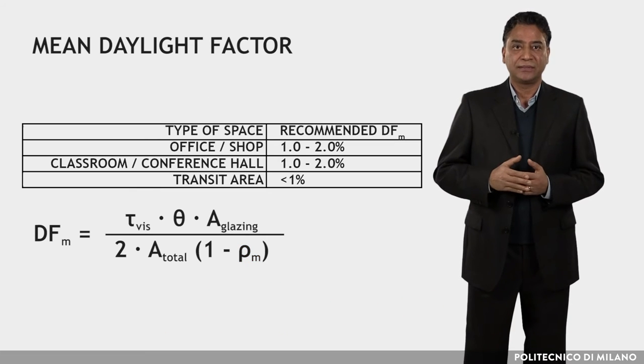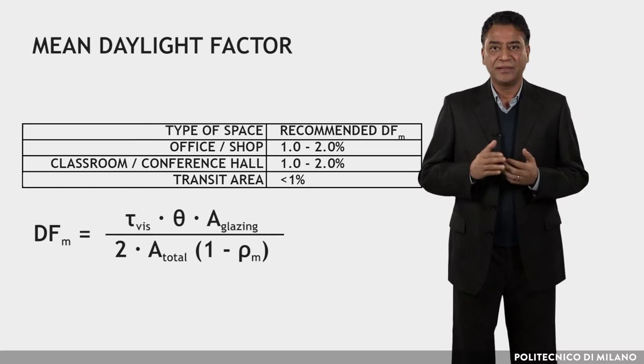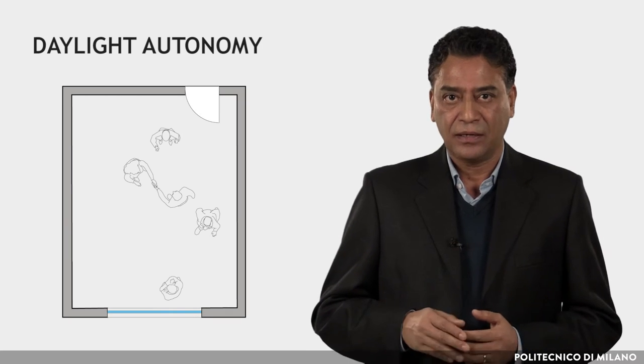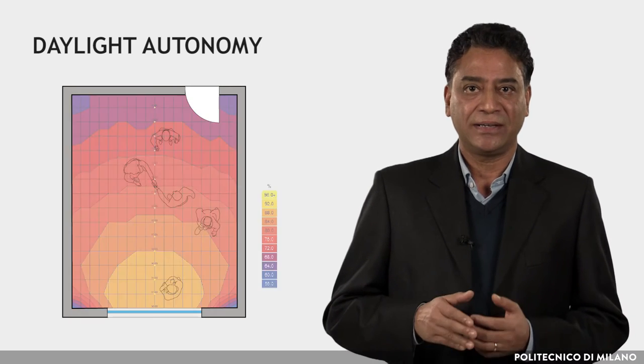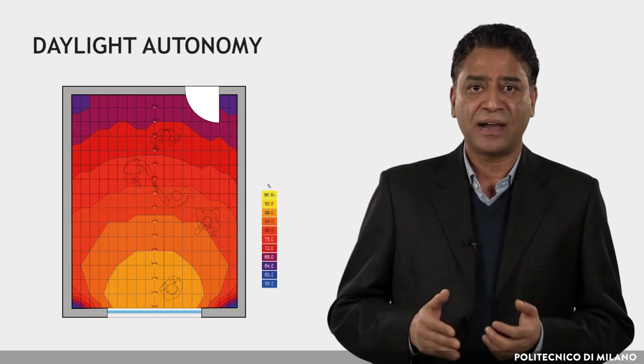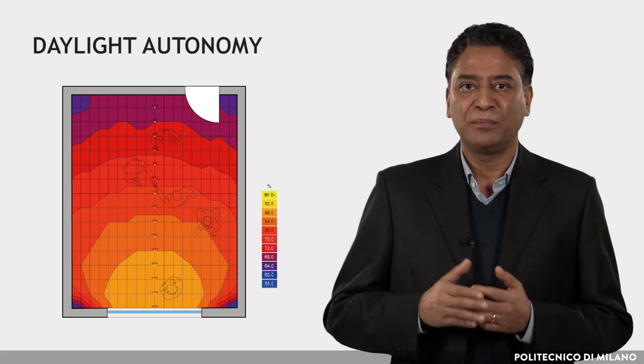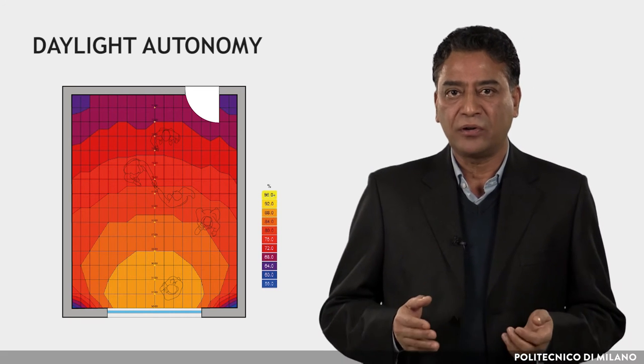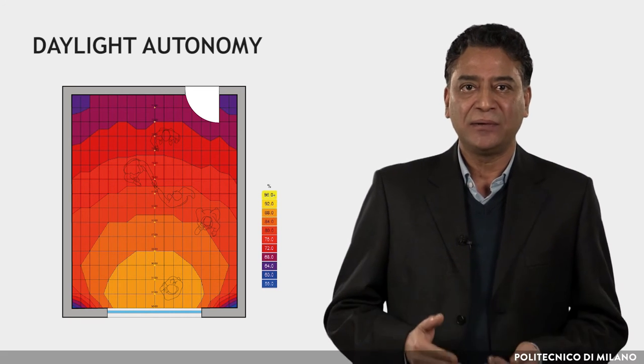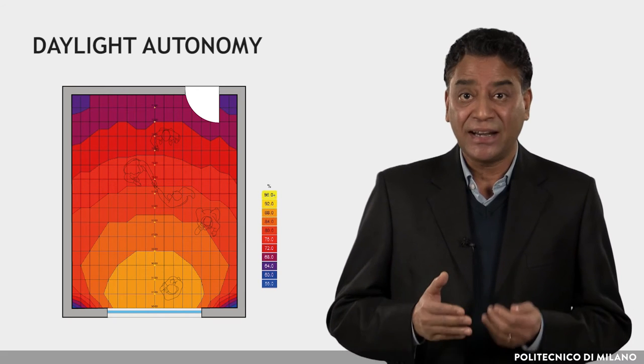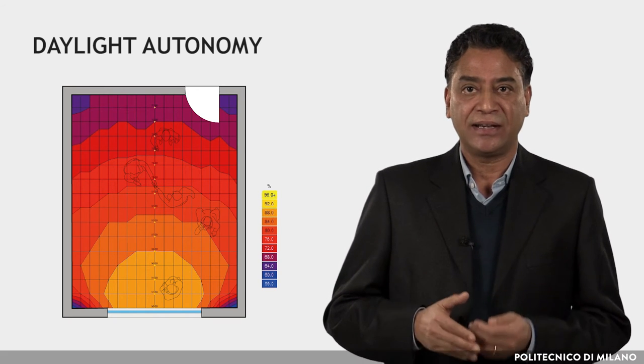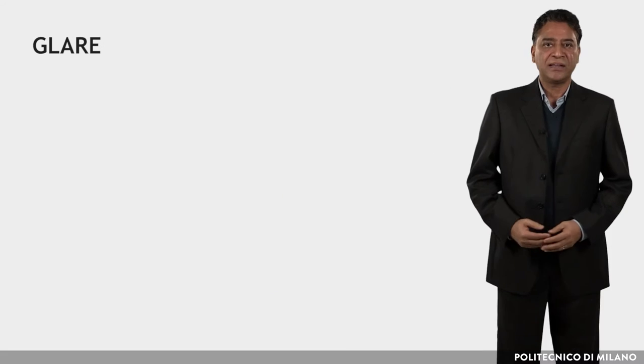In the tables, some examples of recommended values of daylight factor are shown. Along with daylight factor, another parameter is daylight autonomy, which is defined as the percentage of the building occupation hours in which the required minimum level of illuminance can be maintained with natural lighting alone.